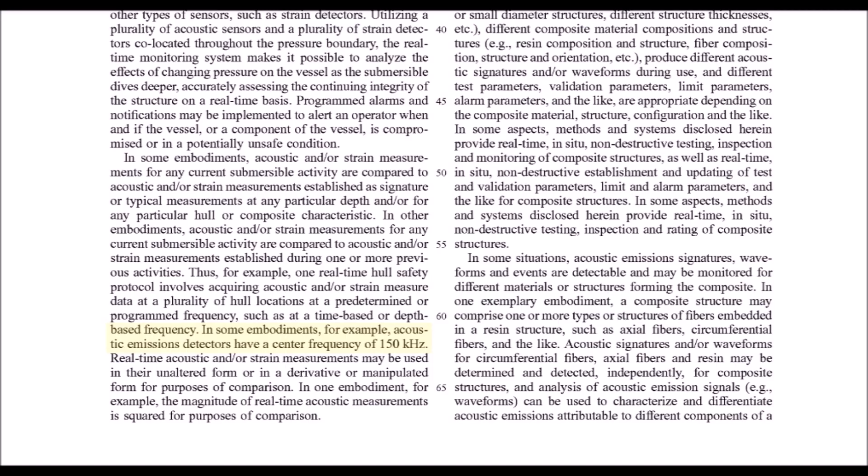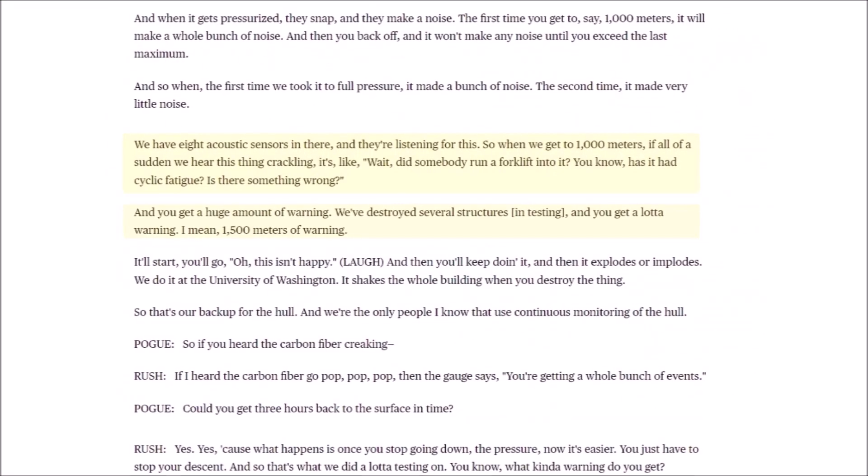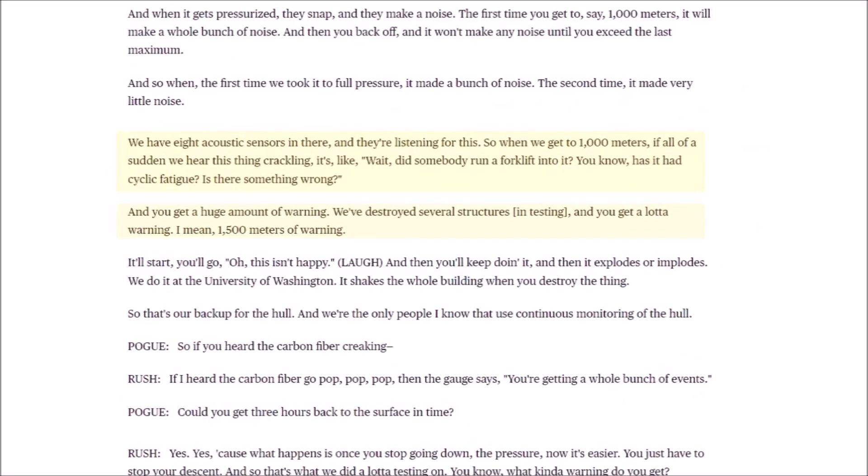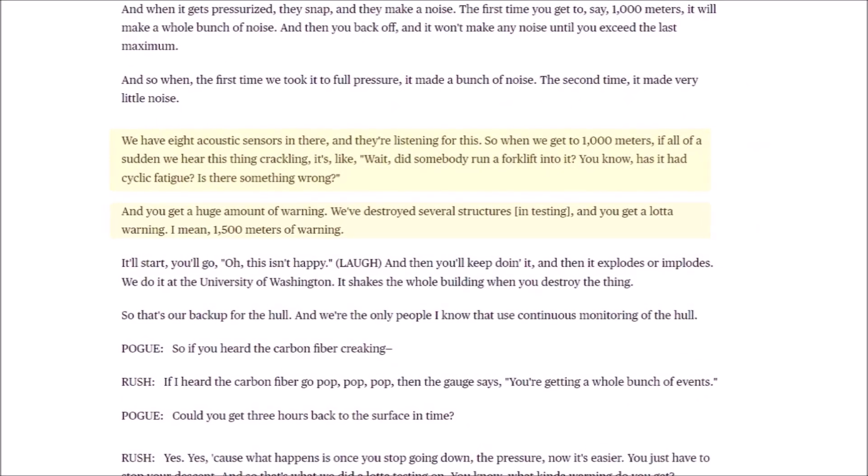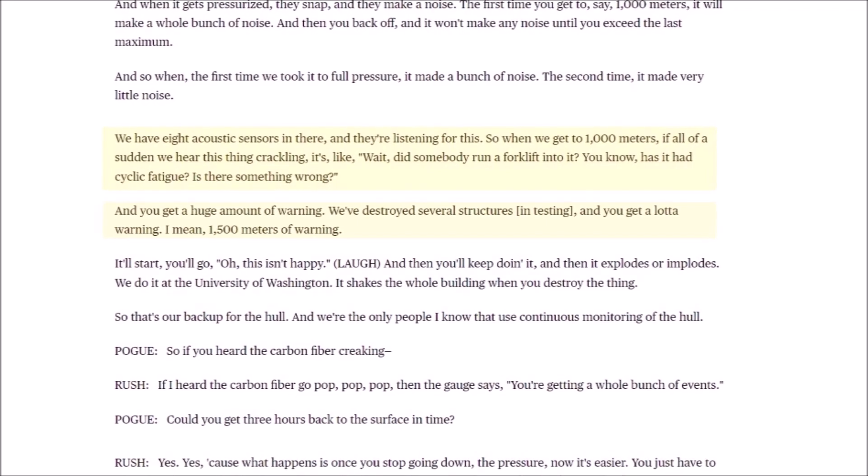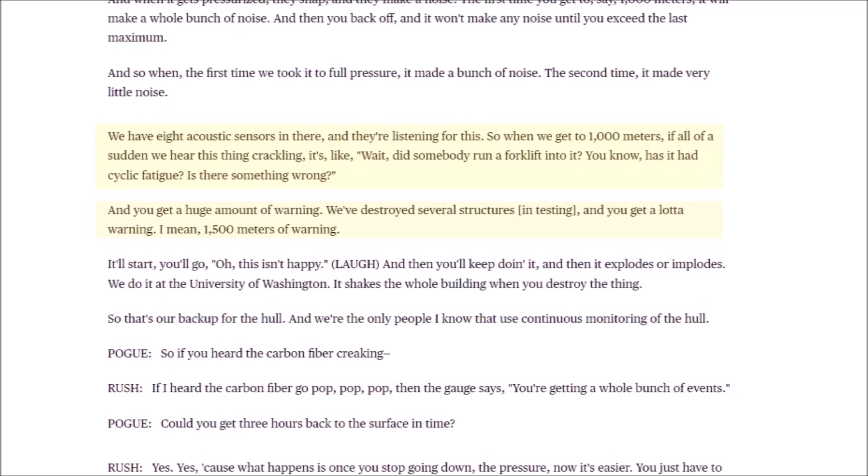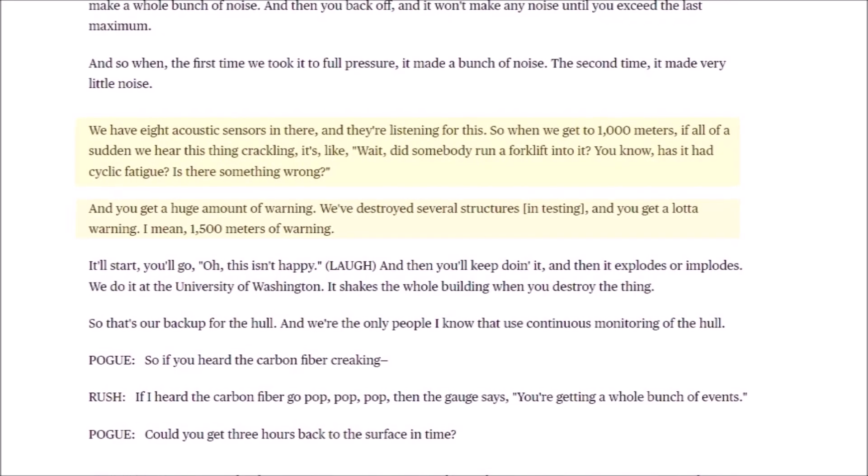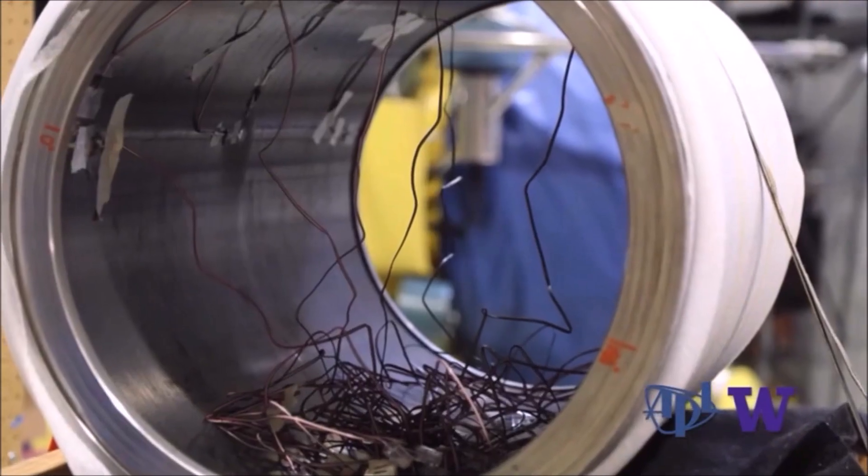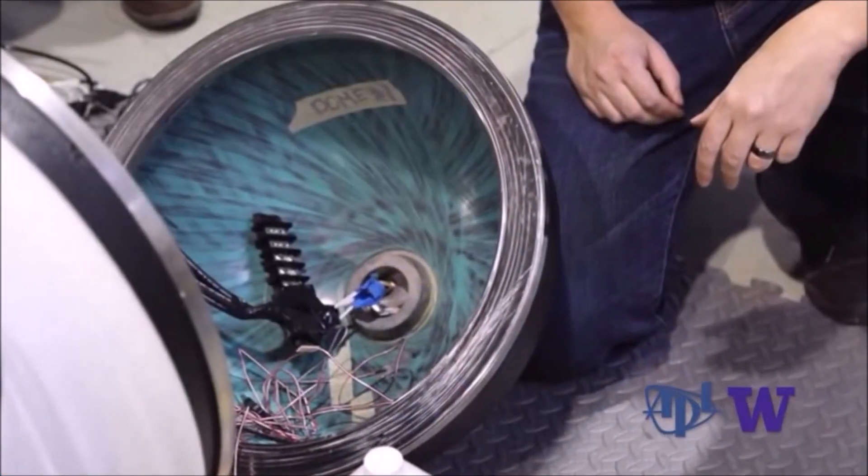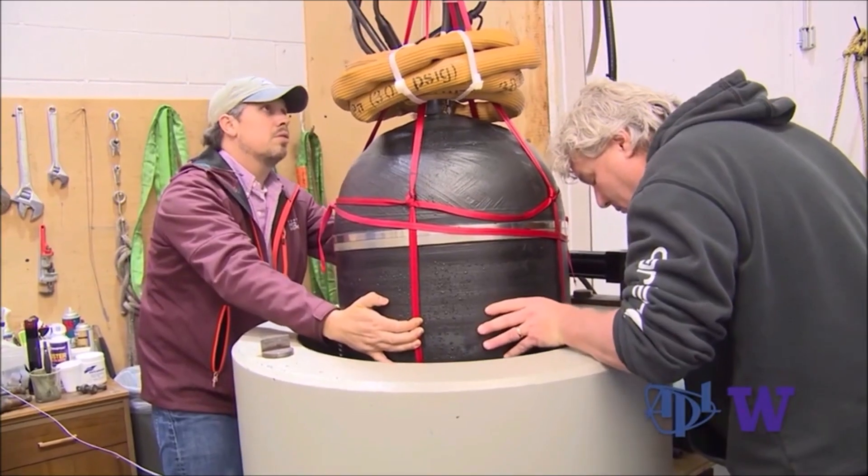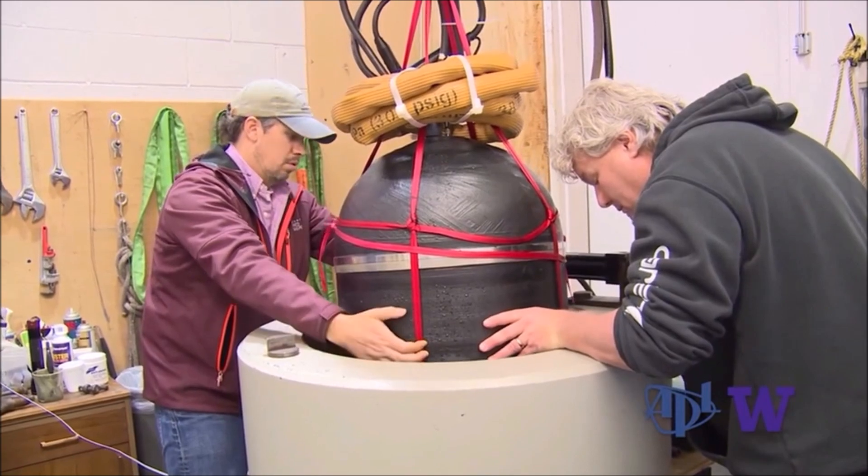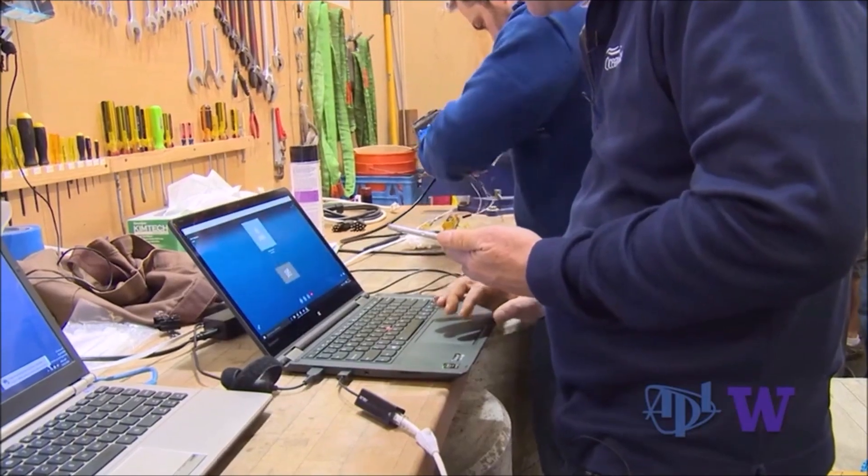According to the patent documents, the center frequency was 150 kilohertz. According to Stockton, there was 1,500 meters before a hull failure would occur, meaning that there was a buffer that, in theory, would give them plenty of time to ascend to a safer depth and thus prevent a hull breach. This was based on a lot of testing he did at the APLUW labs with the carbon fiber hulls. I'm assuming the one-third scale hulls.